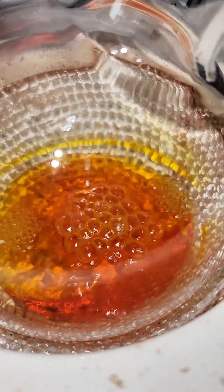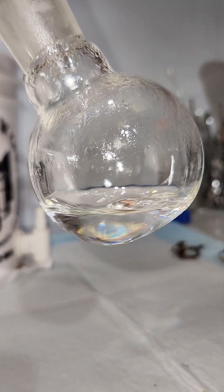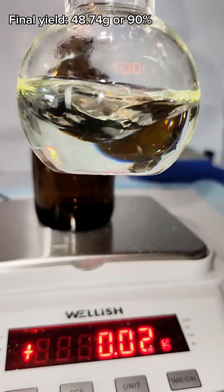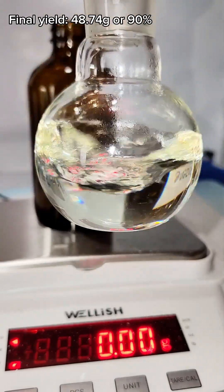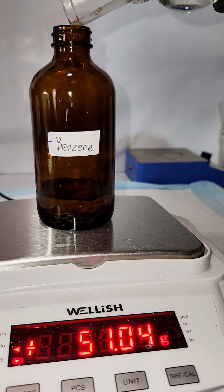I intend to use it to make the indicator methyl red, as well as aniline and a few aniline derivatives. Anyway, in the end my yield was 48.74 grams, which is a 90% yield if you round up. And that's the entire process.